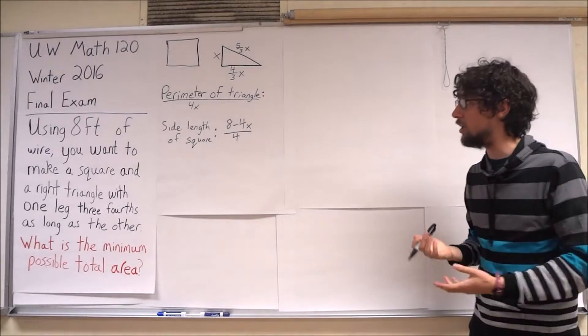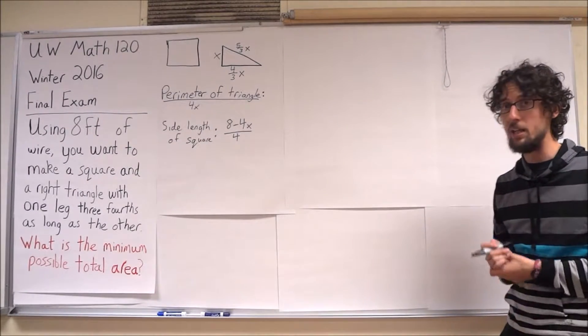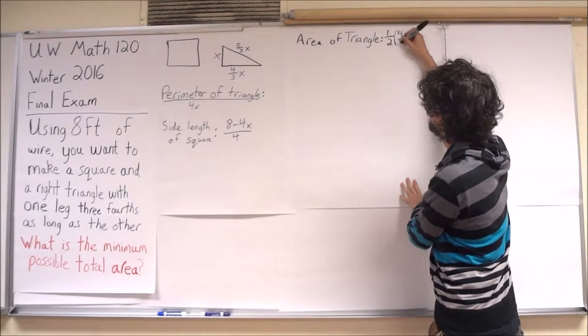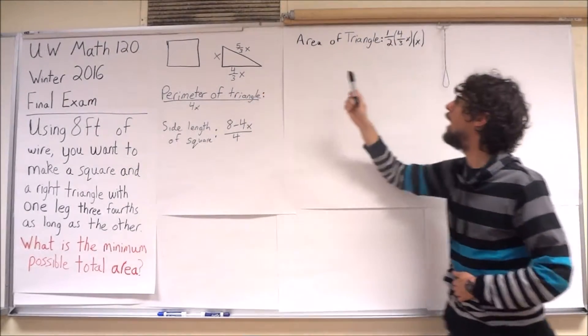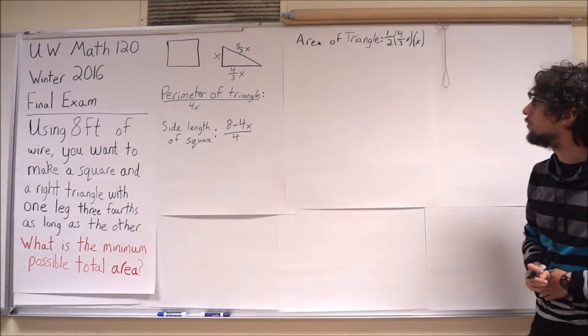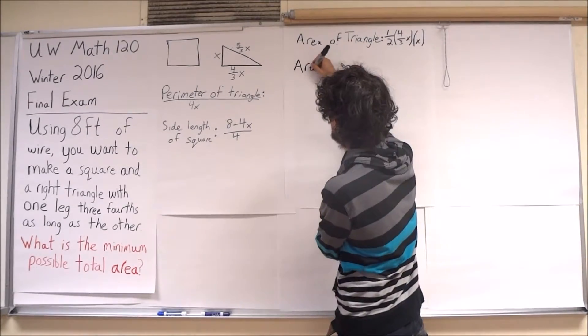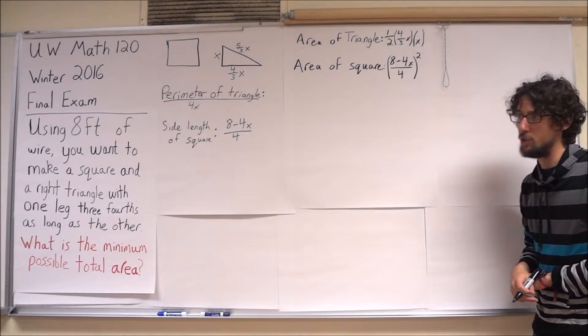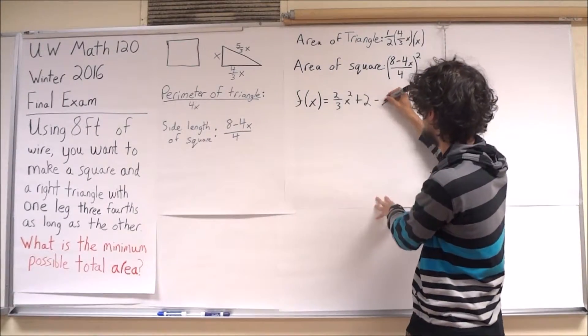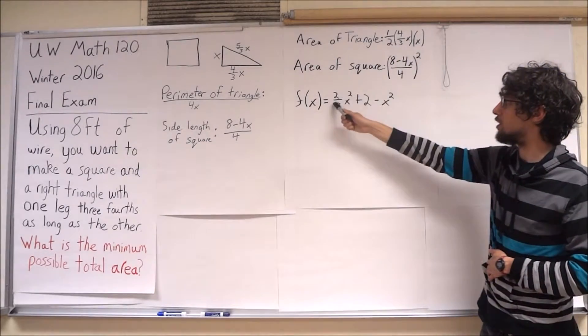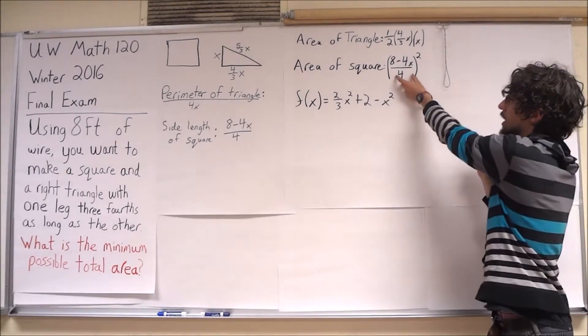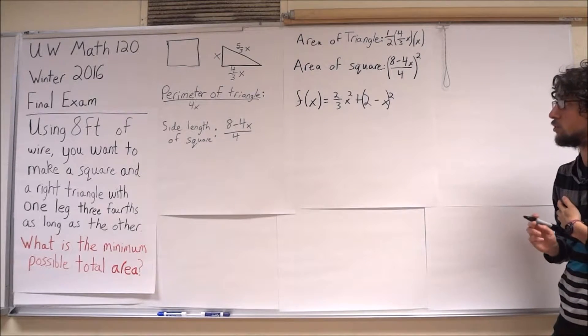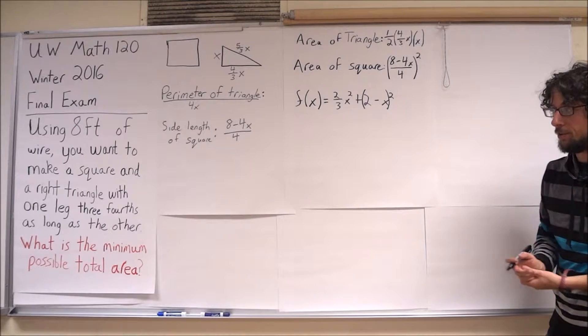I can express now the area of the triangle and the area of the square in terms of x. The area of the triangle is 1/2 the base times the height. We have 4/3x is the base, and x is the height. And the area of the square is simply the side length squared. So, I can now write a function for the total area. I've simplified a little bit - 1/2 times 4/3 is 2/3. And this should have parentheses around it. 8 minus 4x over 4 simplifies to 2 minus x, and I have this squared.